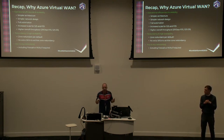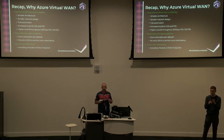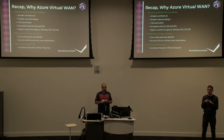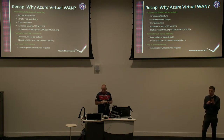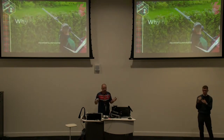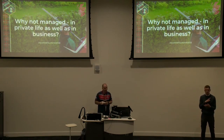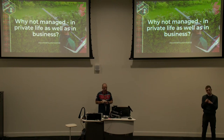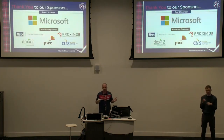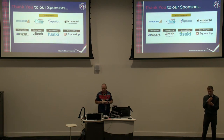Virtual WAN is high availability by default — hubs are provisioned in two different zones. With traditional VPN gateways you have to explicitly choose the zone-redundant VPN gateway SKU, whereas Virtual WAN handles this automatically. You can also include Network Virtual Appliances or Azure Firewall if desired. My recommendation: use managed services where possible — both for personal and business reasons. A huge thanks again to the sponsors: Microsoft, the Platinum sponsor, and the Gold sponsor.